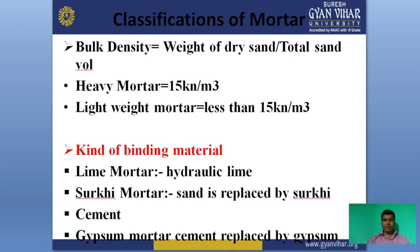Now the classifications of mortar. The bulk density formula is: weight of dry sand upon total volume of sand. Heavy mortar strength is 15 kN/m³ and lightweight mortar is less than 15 kN/m³. The binding materials used are lime mortar, surki mortar (where surki replaces sand), cement, and gypsum mortar. Good properties of mortar are mobility and placeability — how we mix the mortar with other components and how we place it in our projects.